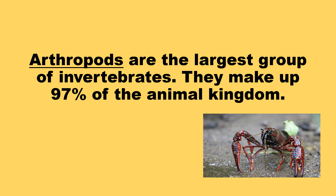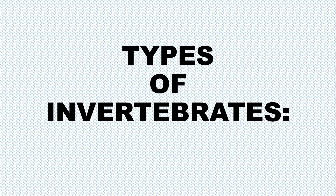Arthropods are the largest group of invertebrates. They make up 97% of the animal kingdom. Types of invertebrates include the following groups.